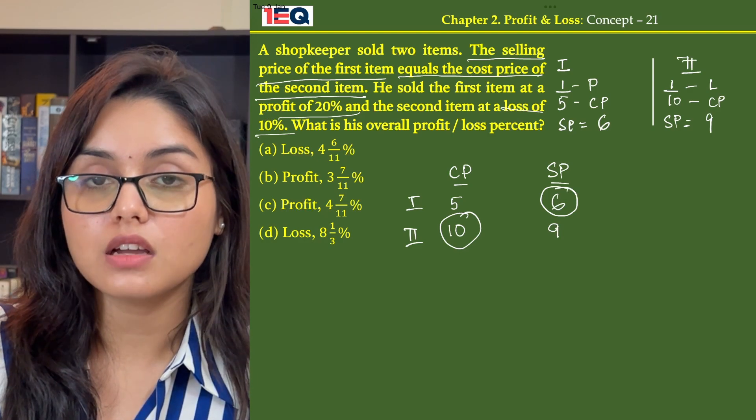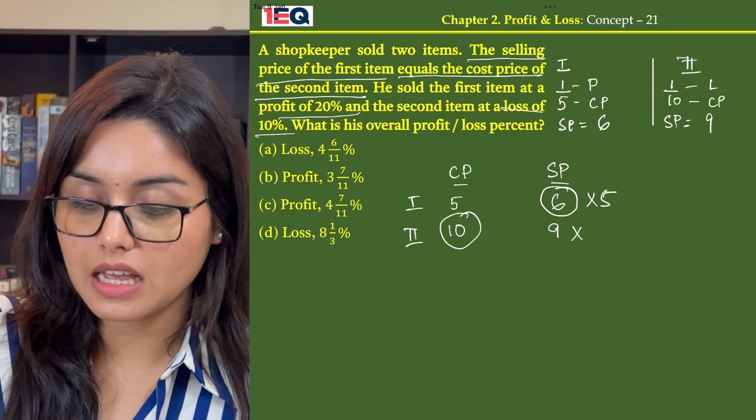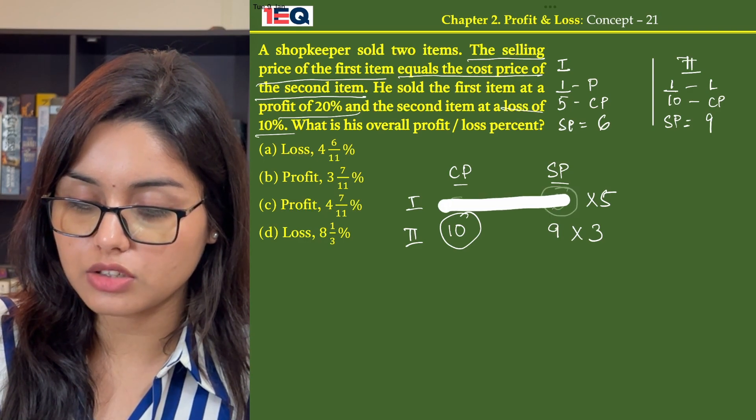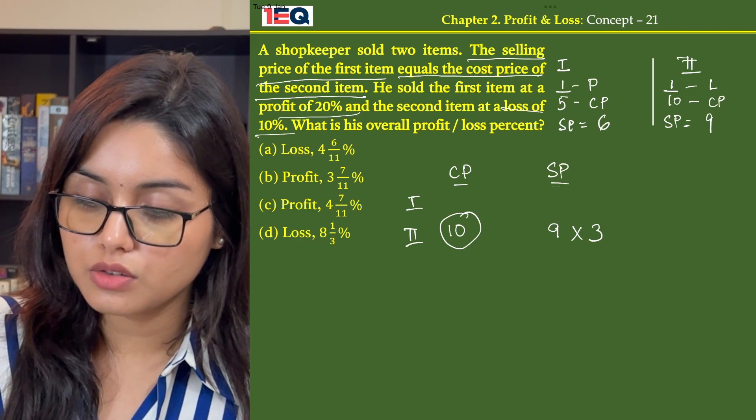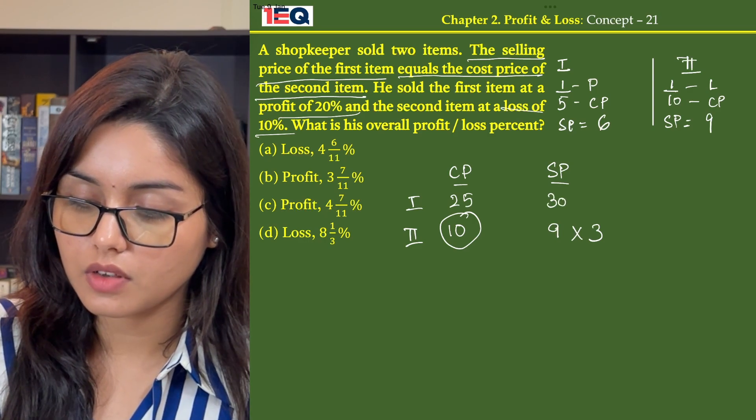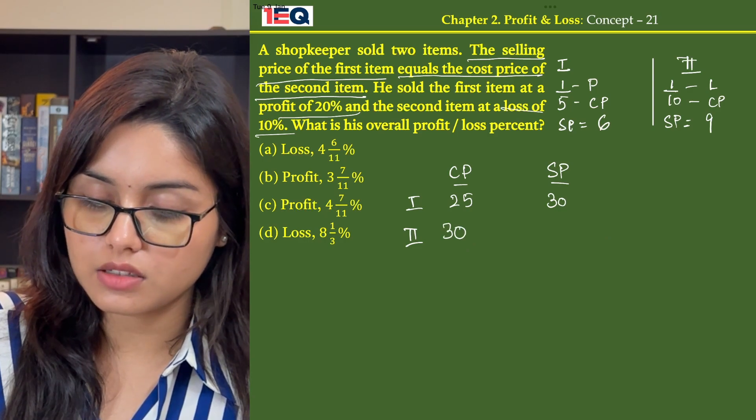Now to make these amounts equal to 30, we multiply the amounts of the first item with 5 and of the second item with 3. So now on multiplying, the amounts change to 25, 30, 30 and 27.